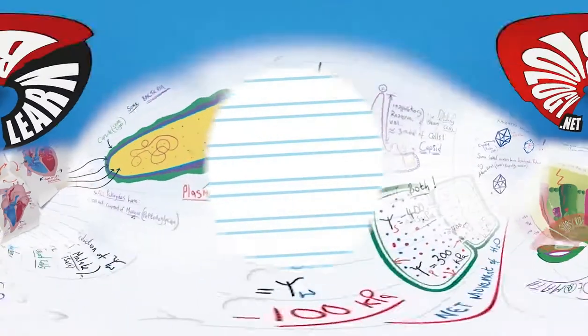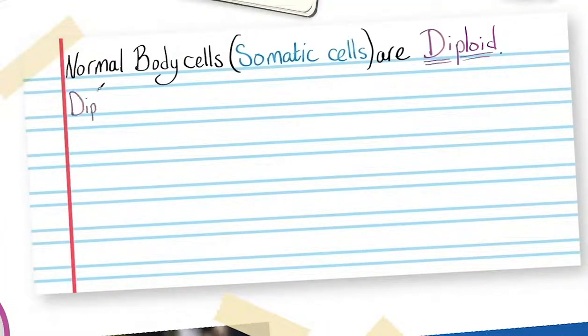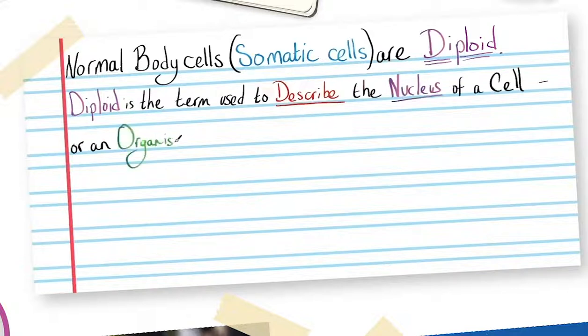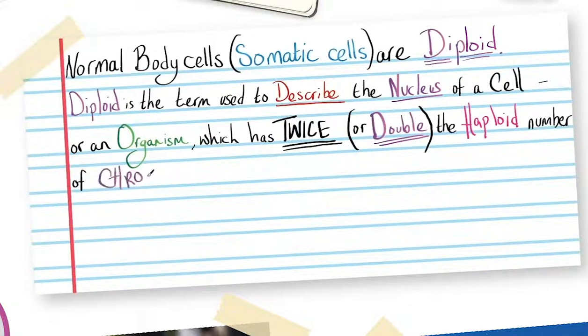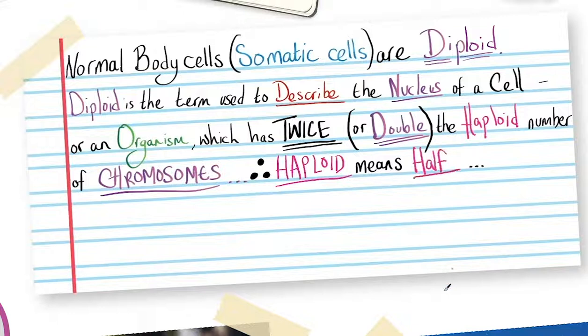Normal body cells or somatic cells are diploid, and diploid is the term used to describe the nucleus of a cell or an organism which has twice or double the haploid number of chromosomes. Therefore haploid means half, but we'll come back to this later.